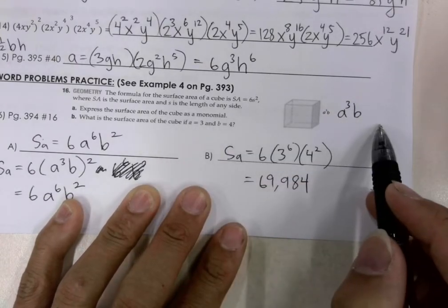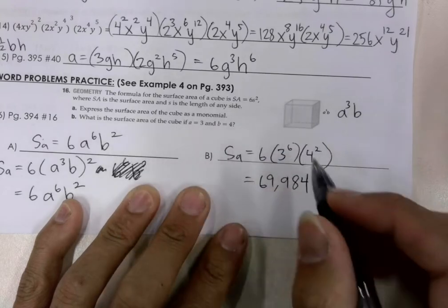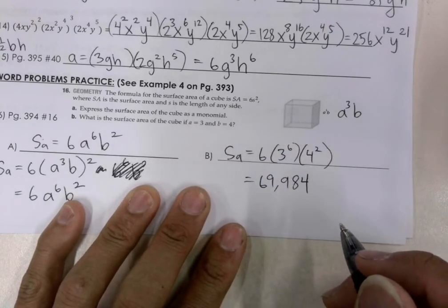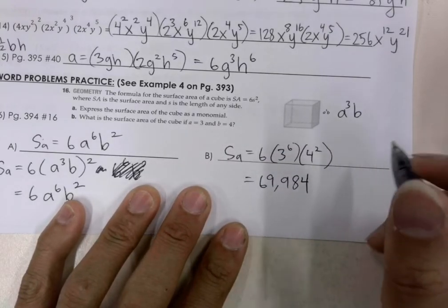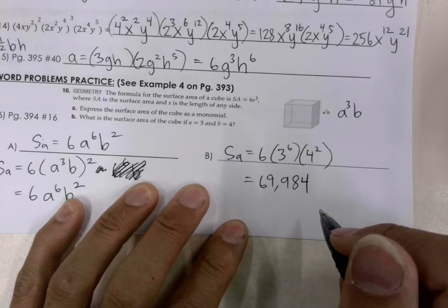And do we have any units here? Nope. So we have no units, right? So whatever units that is squared.